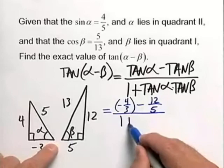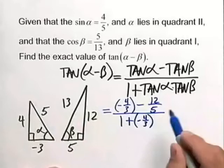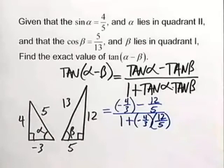This will then be all over one plus the same tangent of alpha, and you can kind of steal that out of the top there, minus four-thirds times the tangent of beta, which is a positive twelve-fifths.